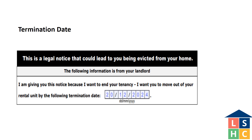The N5 notice to terminate the tenancy can be given to tenants for substantially interfering with another tenant or the landlord's enjoyment of the residential complex or lawful rights, privileges, or interests, damages, or overcrowding.